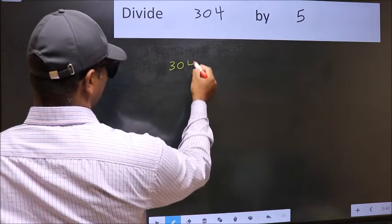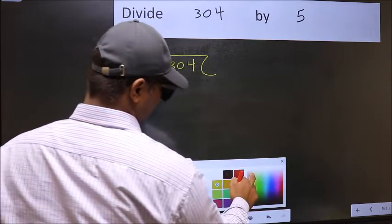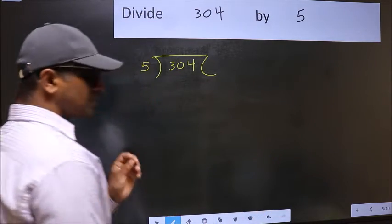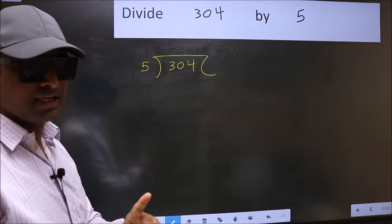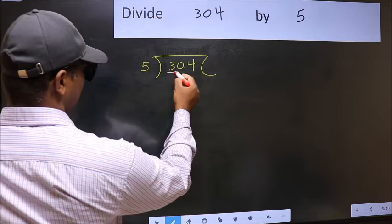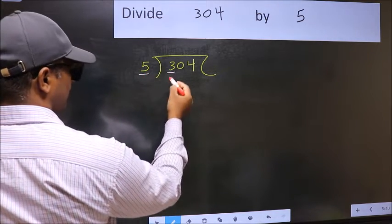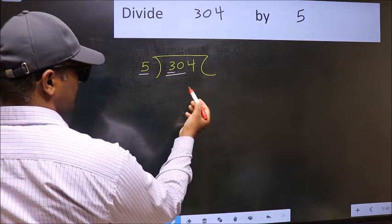304 and 5 here. This is your step 1. Next, here we have 3 and here 5. 3 is smaller than 5, so we should take 2 numbers: 30.